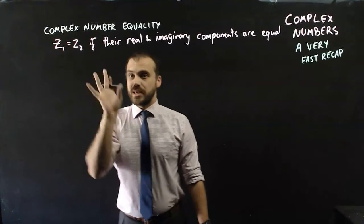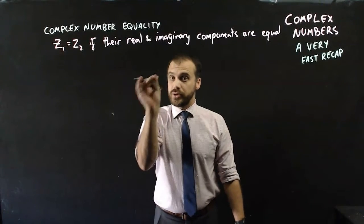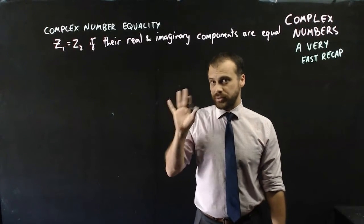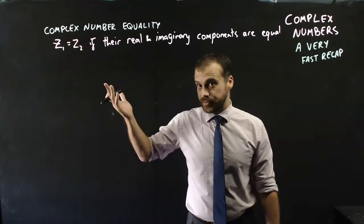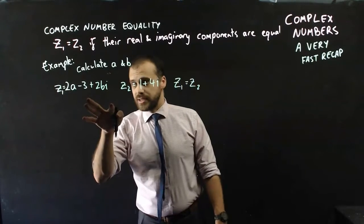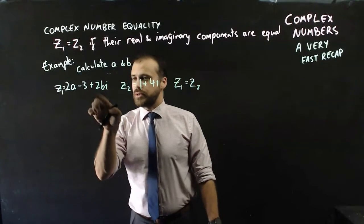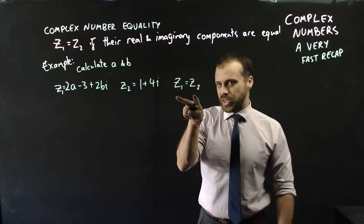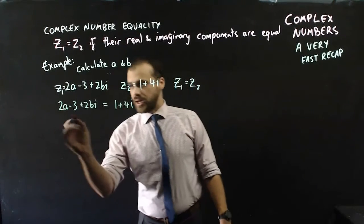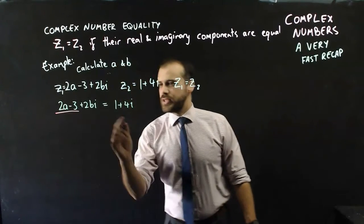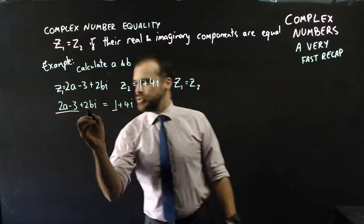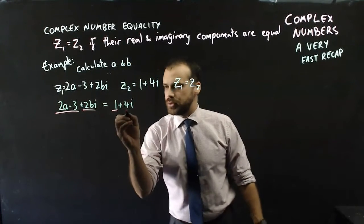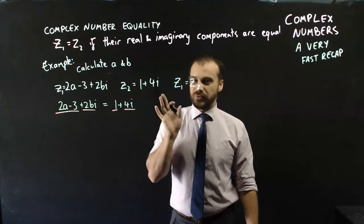Two complex numbers are equal if their real components and their imaginary components are also both equal. This leads to an equation that might look something like this example. We might have some unknowns in a complex number. So z1 might be 2a minus 3 plus 2bi, and z2 might be this. If we know that they're both equal, we can set them equal to each other. And once we've done that, we can say that the real component of z1 must be equal to the real component of z2, and the imaginary component of z1 must be equal to the imaginary component of z2.